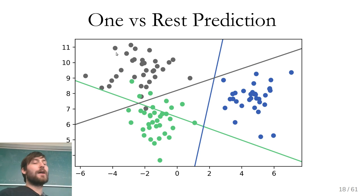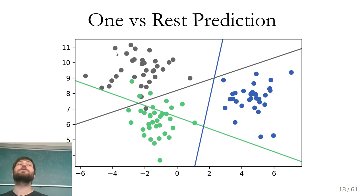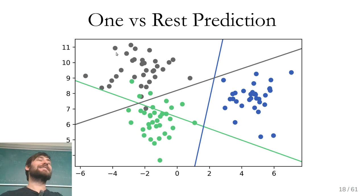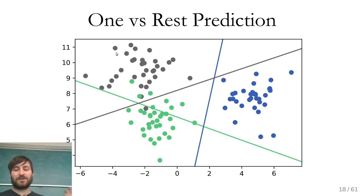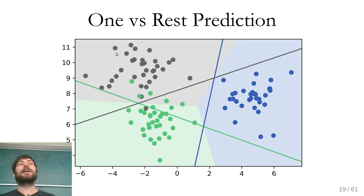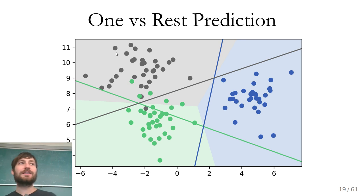Here's an example using three classes. I trained three classifiers: the gray line is gray points versus green and blue; the blue line is blue points versus gray and green; the green line is green points versus gray and blue. For each point in the plane, I predict which of the three classifiers has the highest response, giving these linear decision boundaries. That's one versus rest — the most commonly used strategy because it's pretty simple.